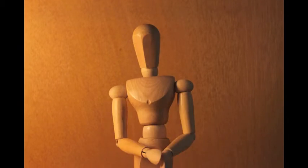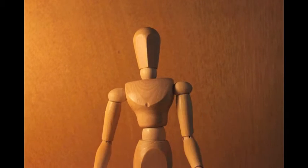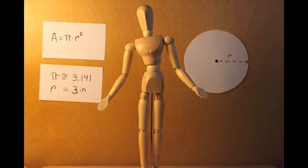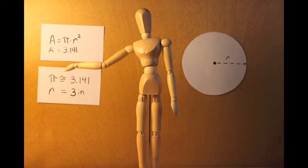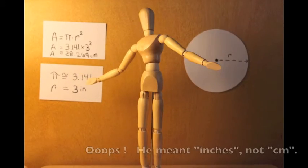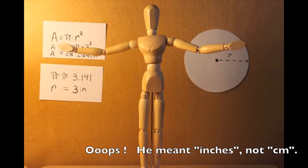So, along with pi, which equals roughly 3.141, we're told that the radius of our circle is 3 inches. Then, pi times 3 squared equals 28.69 square centimeters.